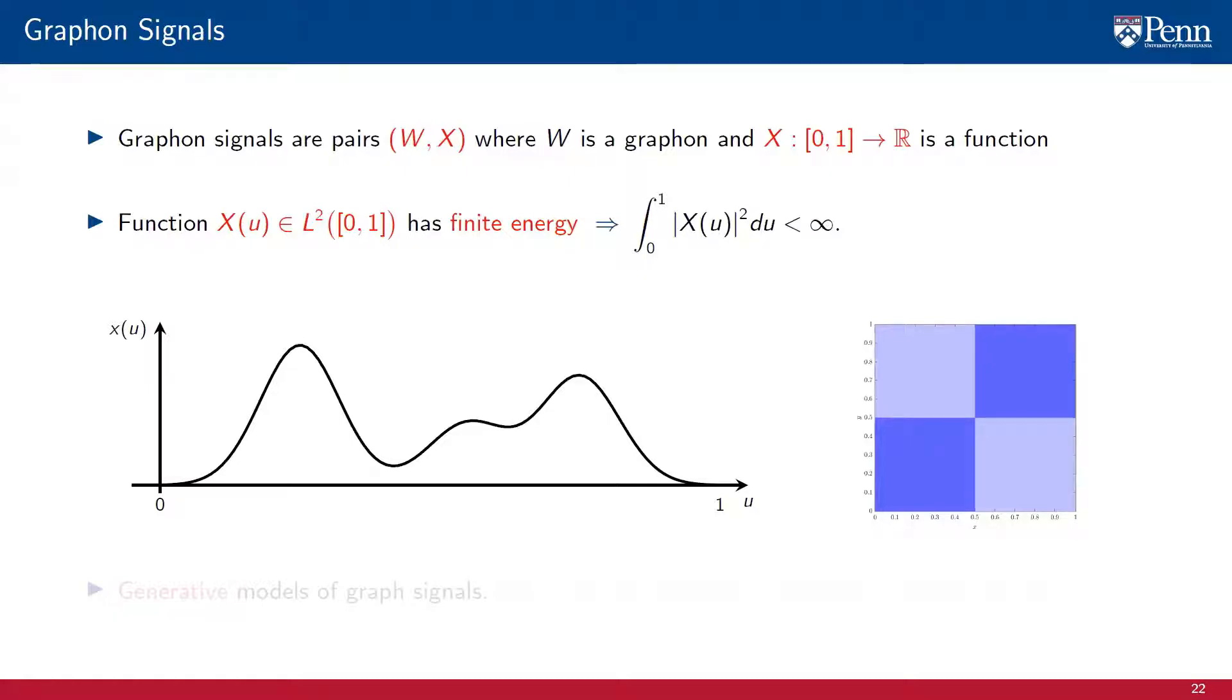As is the case of graphons, graphon signals have dual interpretations. They can be seen as generative models of graph signals, and they can also be seen as limit objects of convergent sequences of graph signals.